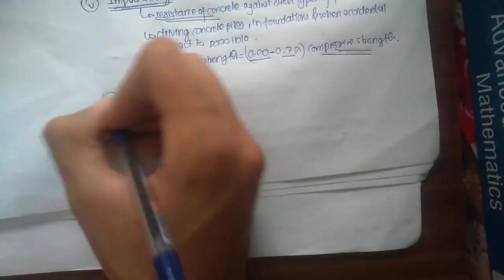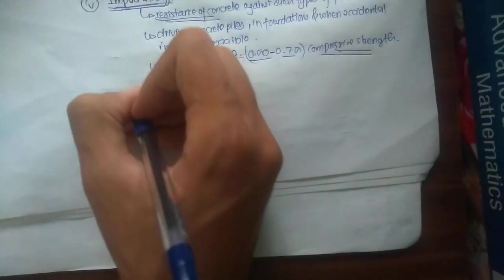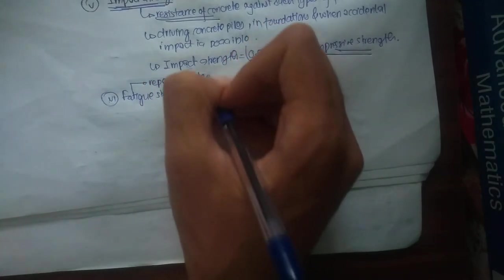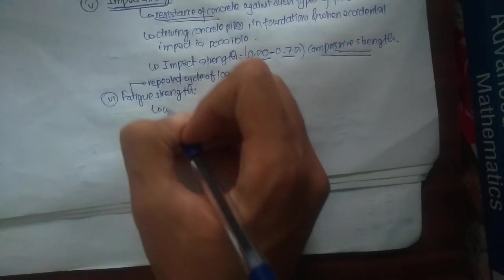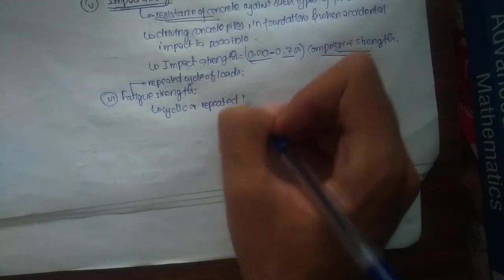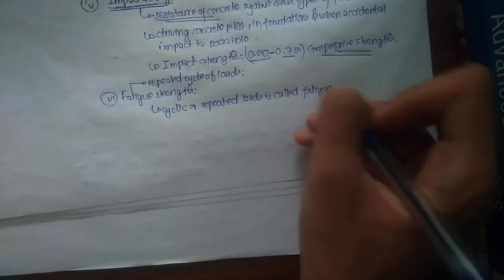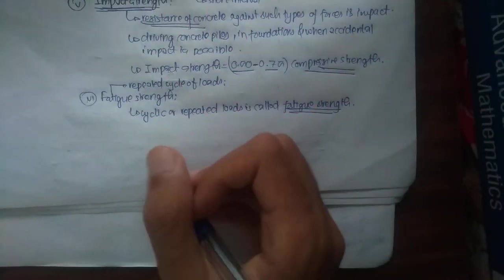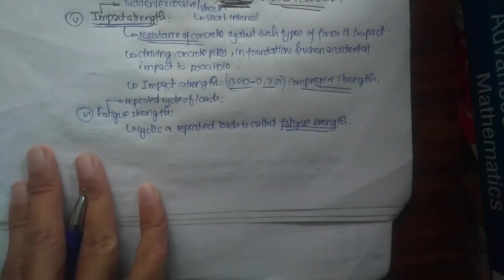Finally, we have fatigue strength. Fatigue is defined as repeated cycles of loads. The measure of resistance of concrete against cyclic or repeated loads is called fatigue strength. Fatigue strength is of great importance as many concrete specimens used in houses — roofs and slabs — are continuously exposed to repeated cycles of loads from furniture, dead loads, live loads, etc.